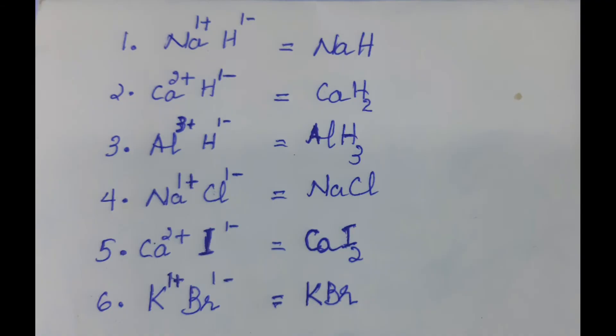Practice examples: Number 1, sodium hydride — sodium is 1 plus, hydride is H 1 minus, formula is NaH. Number 2, calcium hydride — calcium is Ca 2 plus, hydride is H 1 minus, formula is CaH2. Number 3, aluminium hydride — aluminium is Al 3 plus, hydride is H 1 minus, crossed gives formula AlH3.